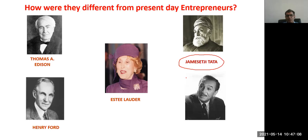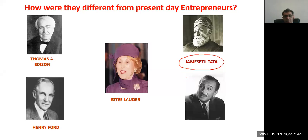Henry Ford came up with his first automobile and started making automobiles — the first internal combustion engine automobile. It was not successful initially, so he kept changing and eventually came up with successful automobiles. One student mentioned Tesla — Tesla Motors is started by Elon Musk, today one of the most famous entrepreneurs. Elon Musk was highly motivated by the story of Henry Ford. In fact, he named his first vehicle after Ford's first vehicle — the Model 3 of Tesla Motors is named after the T3, which was the first automobile of Henry Ford.